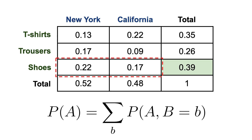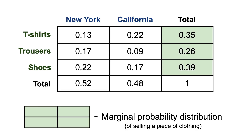Similarly, we can obtain the probabilities of selling a pair of shoes and selling a t-shirt by marginalizing the location, which means summing over all locations. And if we were to put all of this together, we'd get a marginal probability distribution of selling a piece of clothing, no matter the location. We can further apply the same logic and obtain the marginal probability of selling a piece of clothing in New York and in California — both depicting the marginal probability distribution of selling all pieces of clothing at a specific location.